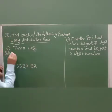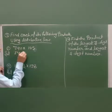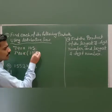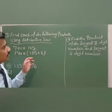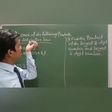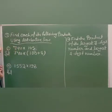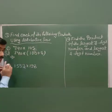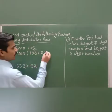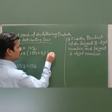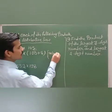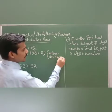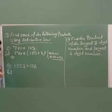So you write 740 into (100 plus 5). Applying the distributive law: A into (B plus C) is equal to A into B plus A into C. So 740 into 105 becomes 740 multiplied by 100 plus 740 multiplied by 5.